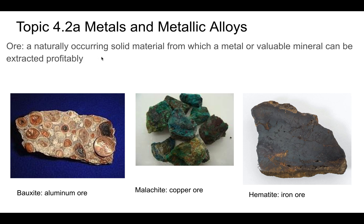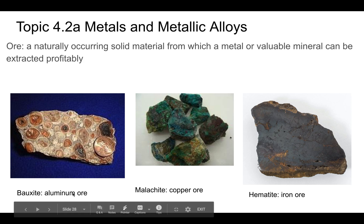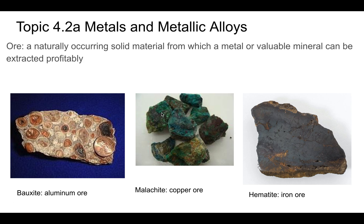Ore is a naturally occurring solid material from which a metal or valuable mineral can be extracted profitably. Here are some examples. Bauxite is an aluminum ore. Malachite is a copper ore — it has a lot of copper in it, mostly copper oxide, and that's why copper turns a greenish color. Hematite is an iron ore, mostly iron oxide mixed with some silicates. Generally you want a very high percentage of metal within an ore to make extraction profitable. All rocks contain some metal, but if it's only 0.1%, you're not going to get much out of it.